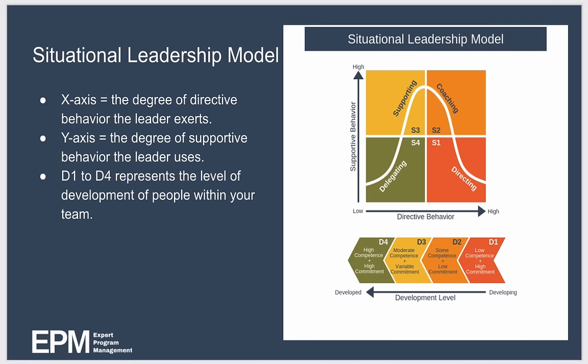Most of us naturally adjust our style to suit the situation whether we realize it or not. For example, we give a newly hired team member more slack to make mistakes than seasoned employees, and we might direct tasks more closely when a deadline is urgent and important. The situational leadership model is a framework that helps us make this adjustment of our style in a more deliberate way — helping us diagnose the situation and then select the best leadership style for it.